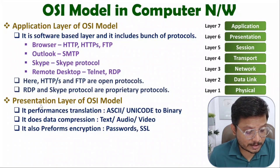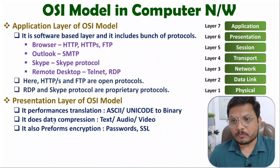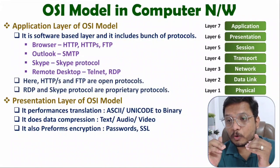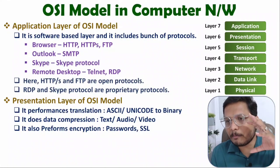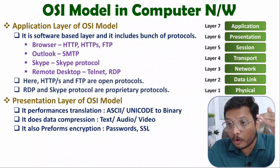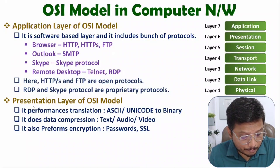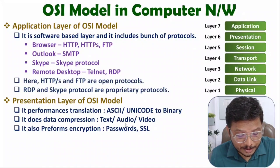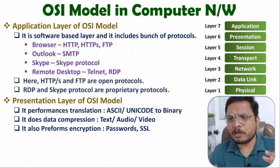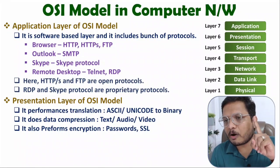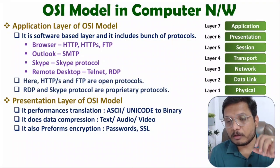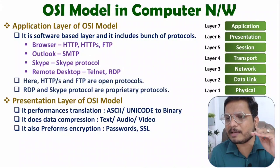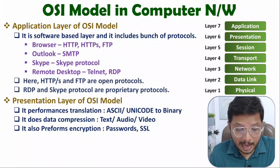The second thing happening at the presentation layer is data compression. Data compression is very essential because without it, your computer network would have to handle a large volume of data. For example, a raw one-minute video file can be 5 GB, but once compressed it becomes only a few MBs.